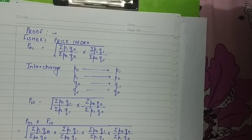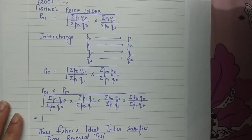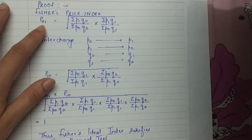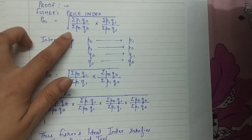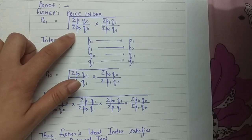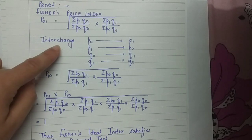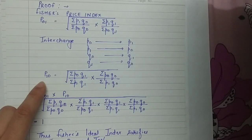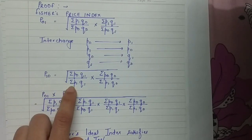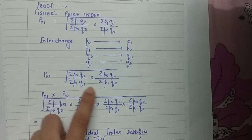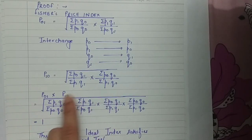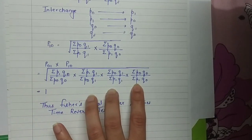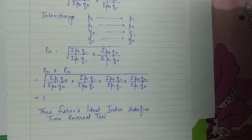Here is the proof that the Fisher price index satisfies the time reversal test. Taking base year as 0 and current year as 1, the Fisher price index P01 = √[(ΣP1Q0 / ΣP0Q0) × (ΣP1Q1 / ΣP0Q1)]. Interchanging 0 and 1, the reversed index P10 = √[(ΣP0Q1 / ΣP1Q1) × (ΣP0Q0 / ΣP1Q0)]. When P01 is multiplied by P10, all terms cancel and the final answer is √1 = 1, which satisfies the time reversal test.